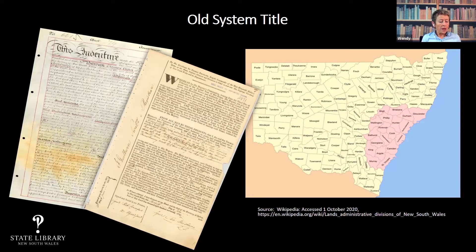On your screen you'll see a map of the 141 counties of New South Wales. The area in pink is really where old system title applies — these are known as the 19 counties and represent what was known as the limits of location, established in the 1820s. Beyond those limits of location it was illegal to settle, though of course people did, and they were known as squatters. The pink counties refer to land stretching from Batemans Bay in the south through to Kempsey in the north and Wellington in the west.